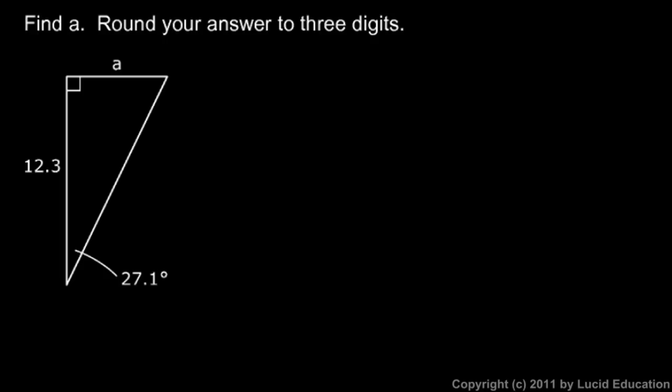This one's pretty straightforward: find 'a', that's the length of this side right up here, and round your answer to three digits. Here's side a, here's another side that we know, and here's an angle.